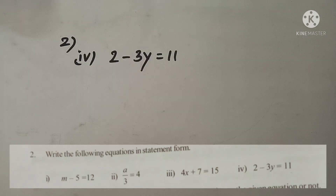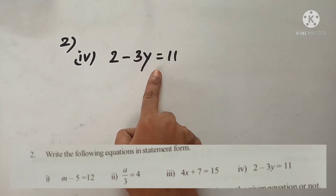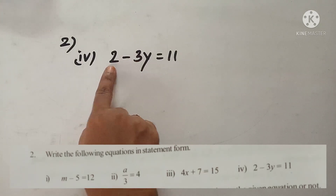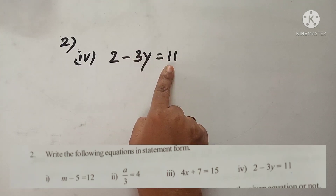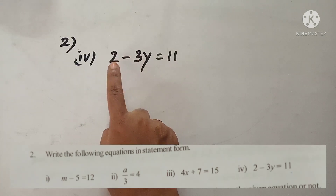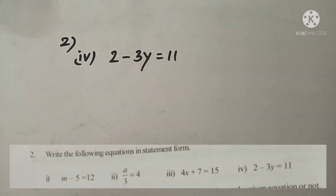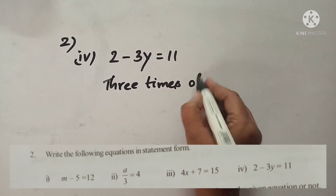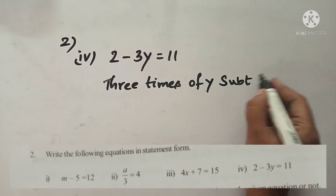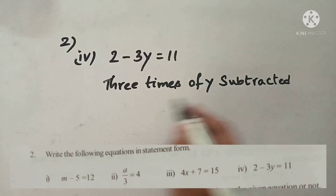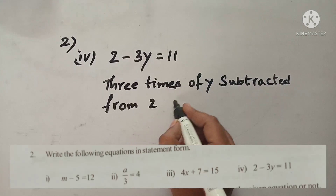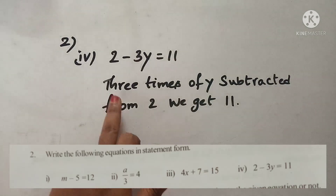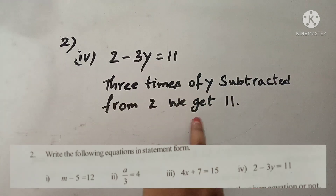Let's see the fourth one: 2 minus 3y is equal to 11. So 3y means 3 times of y is subtracted from 2. The mathematical statement will be: 3 times of y subtracted from 2, we get 11.